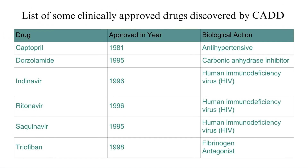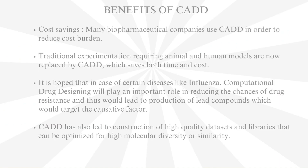These are examples of some clinically approved drugs discovered by computer-aided drug designing. These include Captopril, approved in 1981 and used as an antihypertensive; dorzolamide, the carbonic anhydrase inhibitor; indinavir, ritonavir, and saquinavir, used in the treatment of HIV; and tirofiban, which is a fibrinogen antagonist.